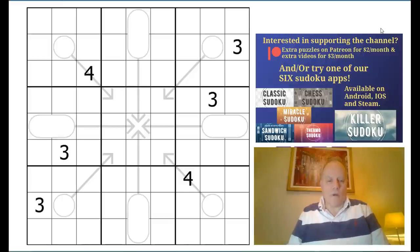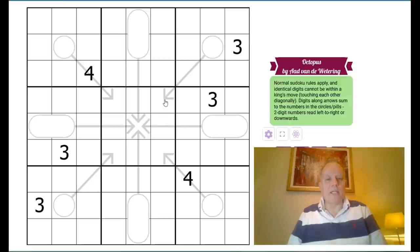So what's going on with this puzzle? Well, we have normal Sudoku rules, we have Arrow rules, which means that the numbers along the arrow add up to the number in the circle. Some of these circles are not circular - they're pill shapes and they contain two-digit numbers either reading downwards or left to right. There's an anti-king rule, so two digits next to each other, touching each other even diagonally, are not allowed to be the same.